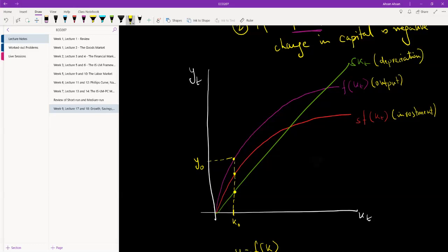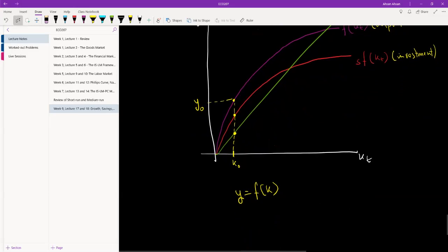So this is how much investment has been made and this right here is how much depreciation has been in the economy. So what we know right now is that in the economy, investment, which is this in period T, is higher than depreciation.